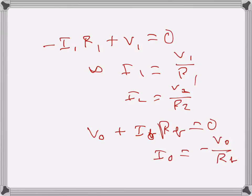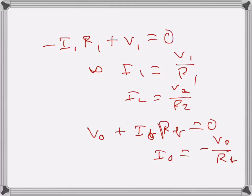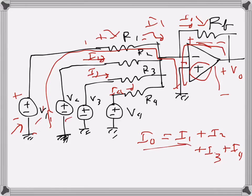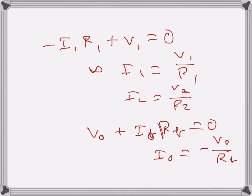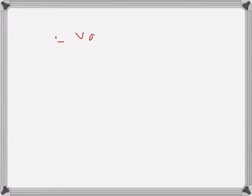So I0 will be minus V0 over RF. That's the value of I0. If we consider the KCL here, the sum of these currents, we can write minus V0 over RF is equal to V1 over R1 plus V2 over R2 plus V3 over R3 plus V4 over R4.